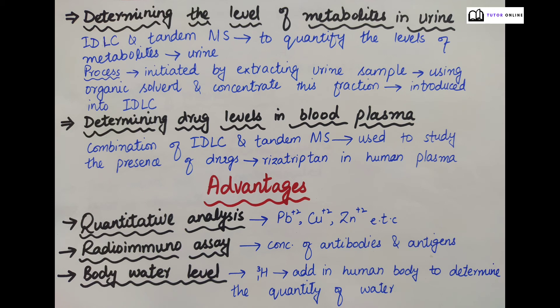Determining drug levels in blood plasma: A combination of isotopic dilution liquid chromatography and tandem mass spectrometry has been used in studies to quantify the presence of drugs such as rizatriptan in human plasma.